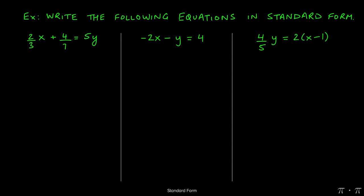So let's work through some of these questions. In the very first problem, we have 2/3 x plus 4/7 equals 5y. Easiest way to approach these questions is to just clear the fractions first, because those are prohibited. Then we just have to make sure that x has a positive coefficient. So we can do this by multiplying every term of the equation by the least common denominator.